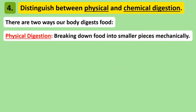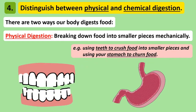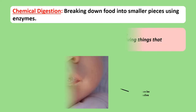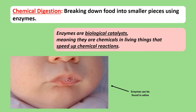Before looking at how the different parts of the digestive system make these four stages happen, it's important to know that your body can break down food in two different ways. The first way is called physical digestion, which can be described as mechanically breaking down food. We use our teeth and the churning of our stomach to physically digest food. The second way is called chemical digestion, and this is breaking down food using enzymes. Enzymes are made from protein, and scientists refer to them as biological catalysts, meaning that enzymes are chemicals inside a living thing that speed up chemical reactions, such as digesting food.